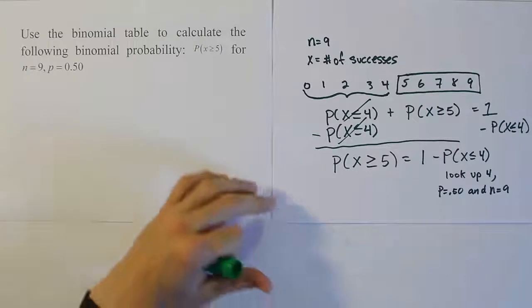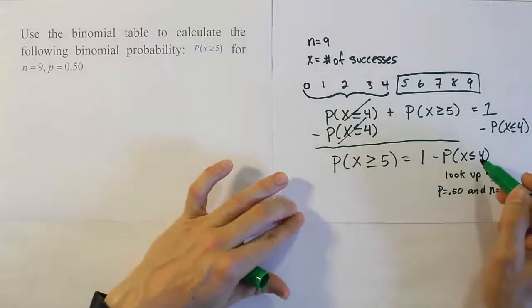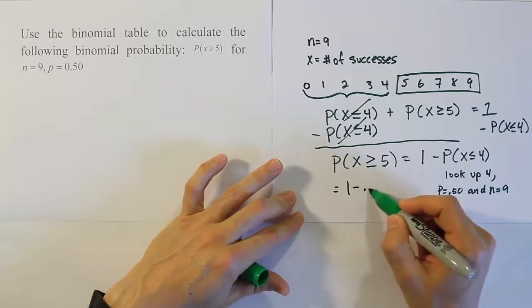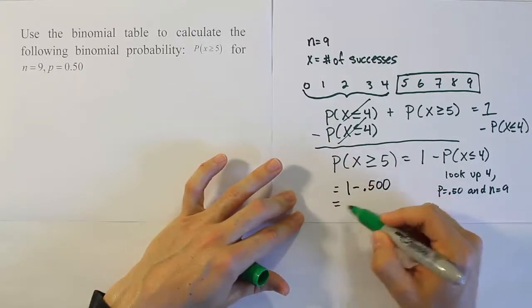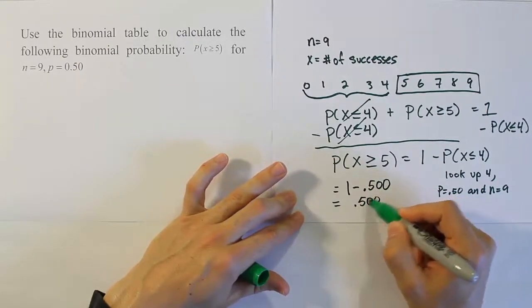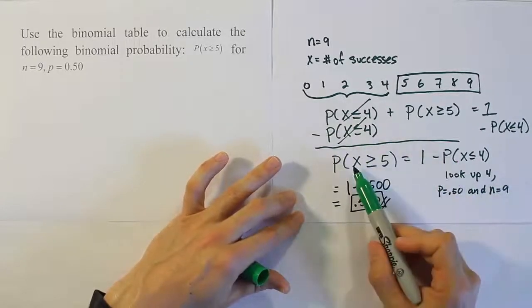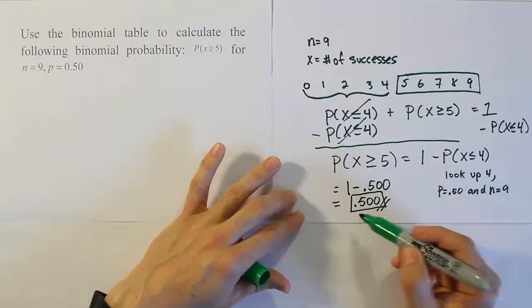Okay, so our table value is 0.5 for this probability. So our answer becomes 1 minus 0.500, which of course is 0.500. So that's the solution for our problem. The probability that x is greater than or equal to 5 is 50%.